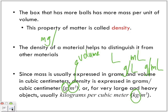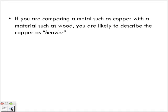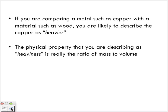If you're comparing a metal such as copper with a material such as wood, you are likely to describe the copper as heavier. The physical property that you're describing as heaviness is really the ratio of mass to volume.